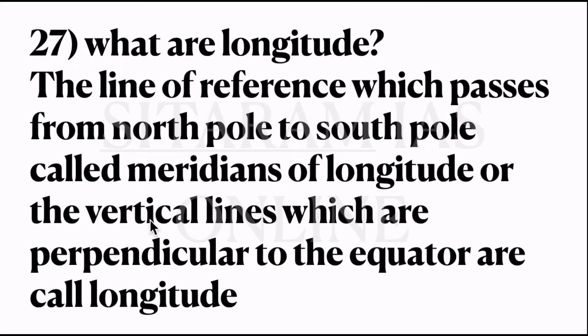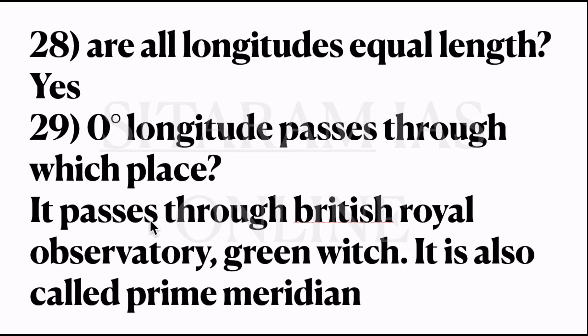27th question: what are longitudes? Longitudes are the lines of reference which pass from the North Pole to the South Pole. These are also called meridians of longitude, or the vertical lines which are perpendicular to the equator. 28th question: are all longitudes of equal length? Yes, all the longitudes are of equal length. 29th question: 0 degree longitude passes through which place? It passes through the British Royal Observatory, Greenwich. It is also called the prime meridian.